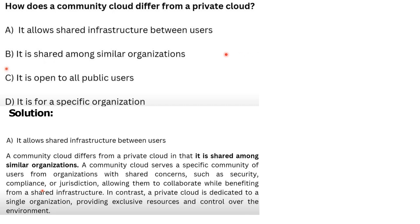Next question: How does a community cloud differ from a private cloud? Options: A) It allows shared infrastructure between users, B) It is shared among similar organizations, C) It is open to all public users, D) It is used for a specific organization. The correct answer for this question is: it allows shared infrastructure between users.